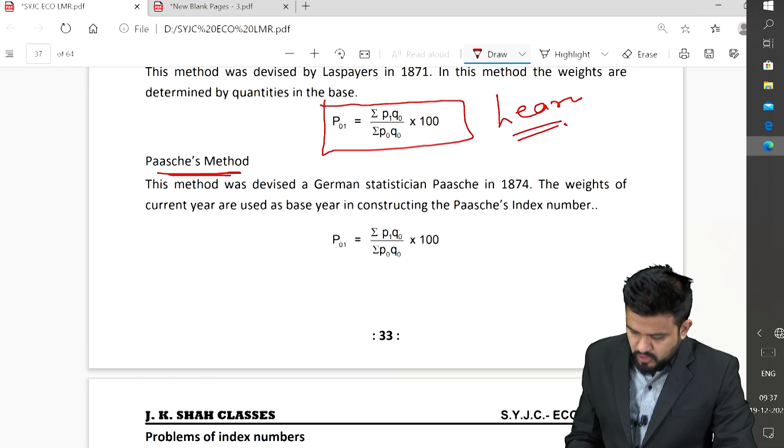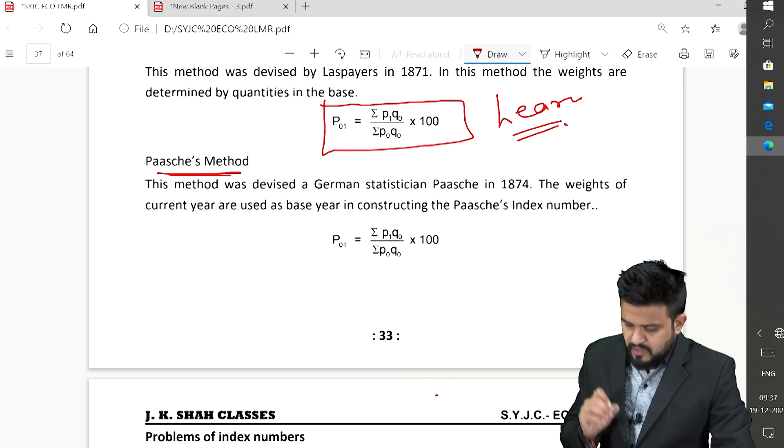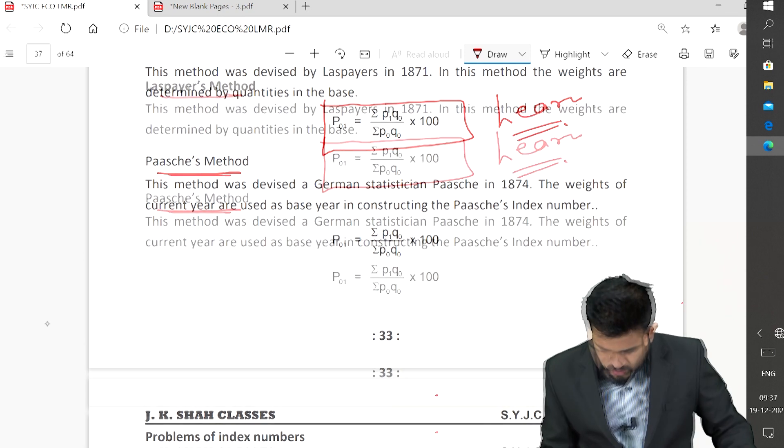Pasches is a German statistician. P_01 equals summation P_1 Q_1 upon summation P_0 Q_1 into 100. This was Pasches.